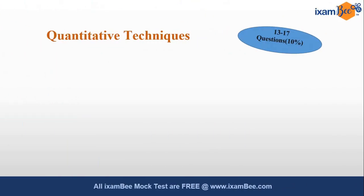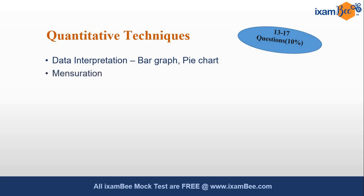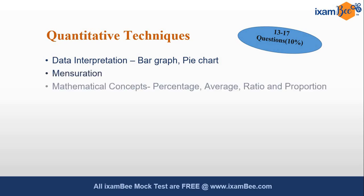The fifth section of the exam is quantitative techniques, which holds a weightage of 10%. The areas covered include data interpretation, bar graph, pie chart, area, volume, other mathematical concepts, percentage, average, and ratio and proportion. The idea behind this section is to judge your mathematical knowledge. Therefore, this list is not exhaustive and you need to be prepared with all kinds of mathematical-based questions.